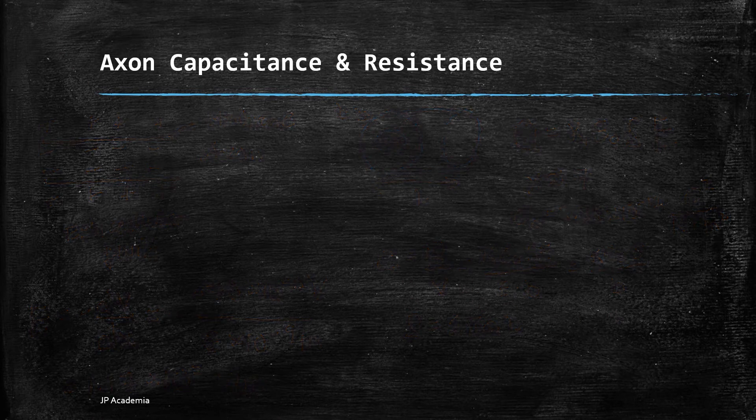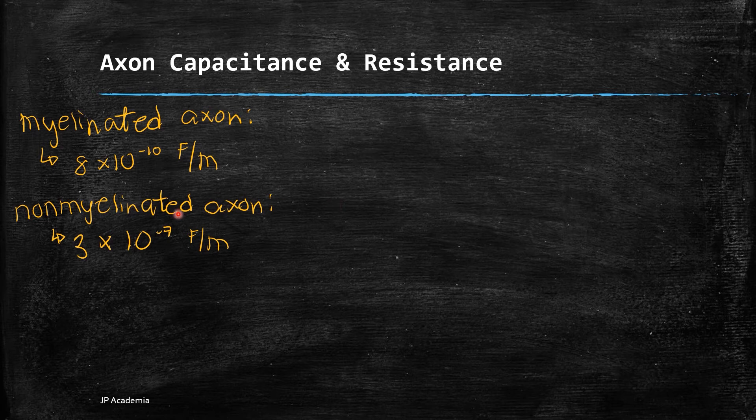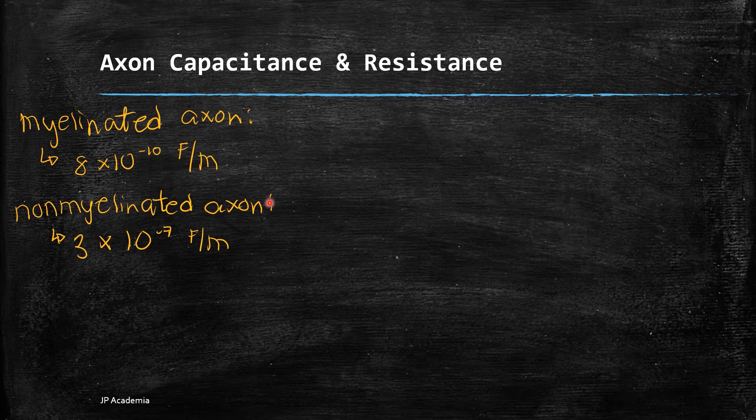The capacitance and charge for myelinated axon are smaller than for the non-myelinated axon. I have here an approximate figure of the capacitance per unit length in farads per meter of the axon.